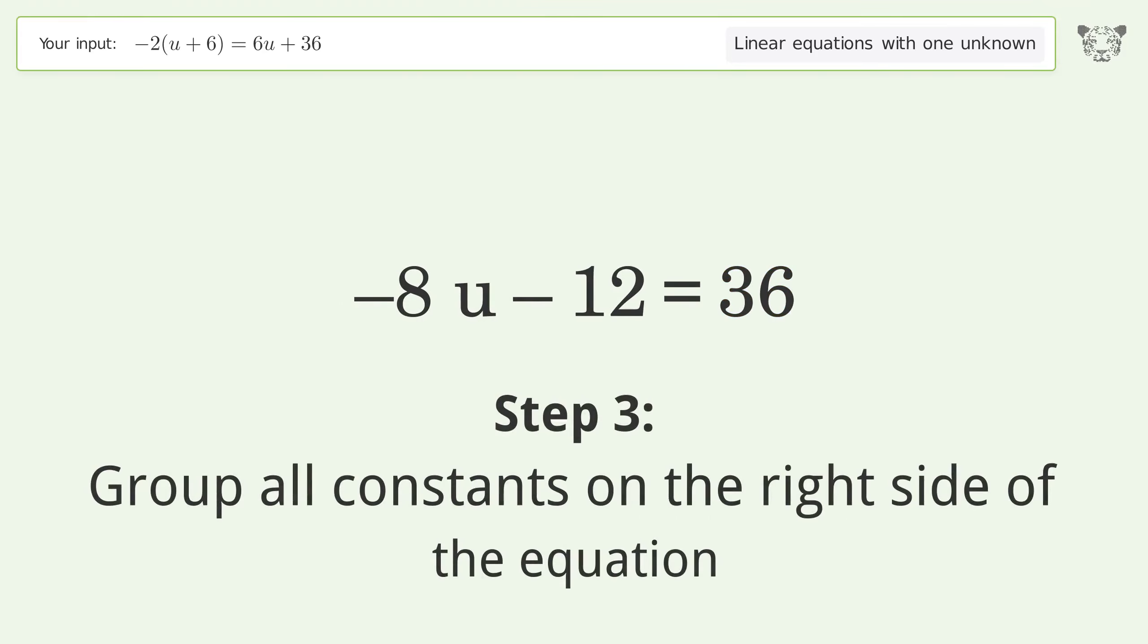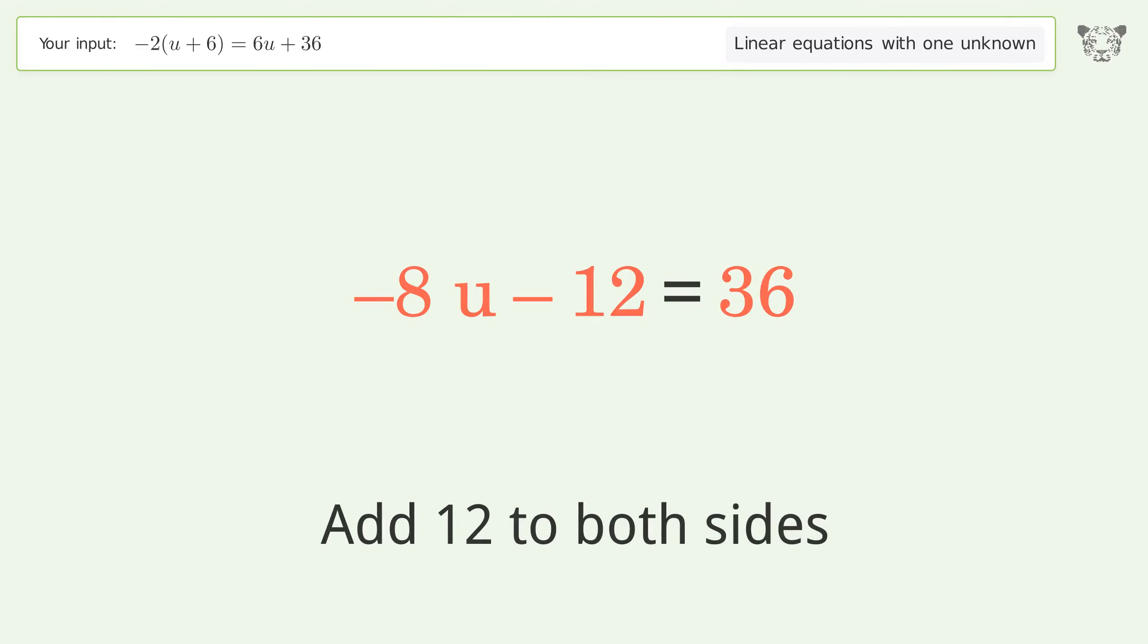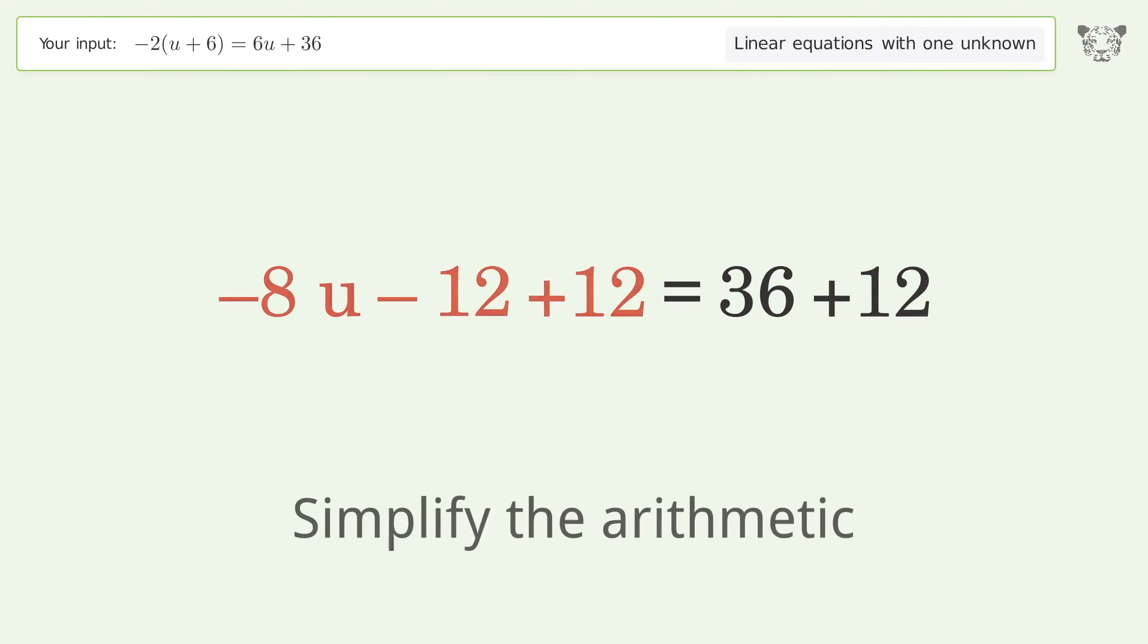Group all constants on the right side of the equation. Add 12 to both sides, simplify the arithmetic.